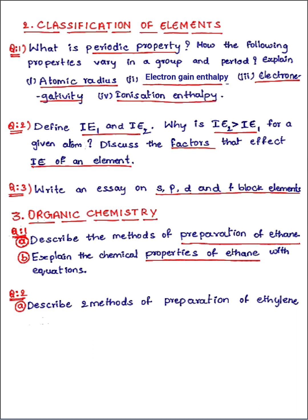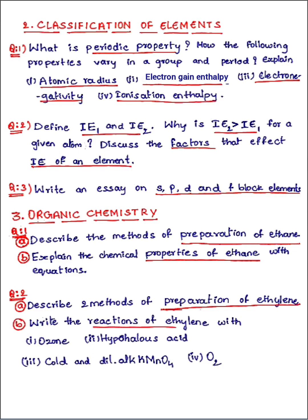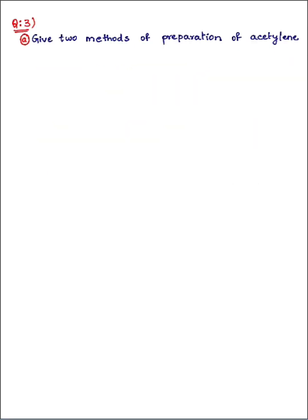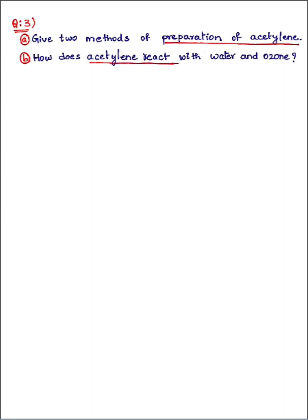The second organic chemistry question covers ethylene: question a asks for two methods of preparation of ethylene, and question b asks for reactions of ethylene with ozone, hypohalous acid, cold and dilute alkaline potassium permanganate, and oxygen. The third question covers acetylene: question a asks for two preparation methods of acetylene, and question b asks how acetylene reacts with water and ozone — only two chemical properties are required here.